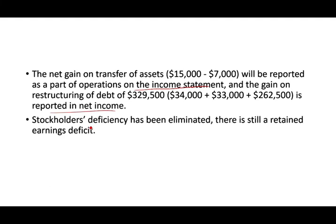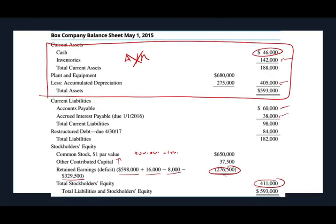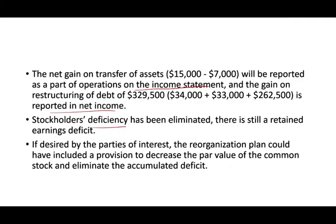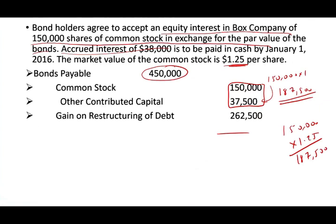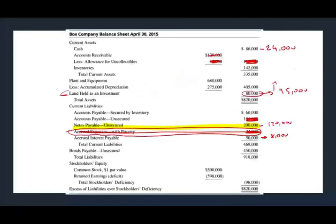Notice the stockholders' deficiency has been eliminated, but we still have a deficiency in retained earnings. We could credit retained earnings and debit capital stock and other contributed capital to make the deficit go down to zero. The reorganization plan could also have included a provision to decrease the par value of the common stock and eliminate the deficit.